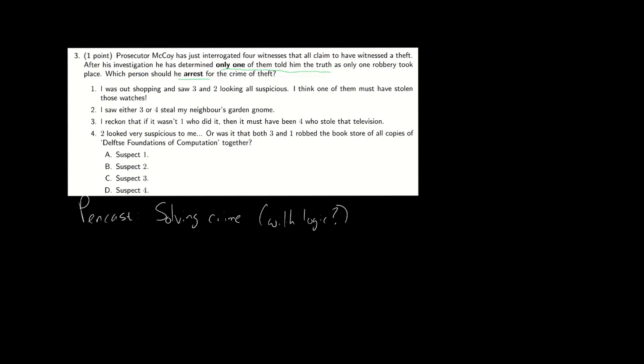Well, let's first take a look at what each of them state. So the first one says that either two or three committed the crime. The second person says that three or four committed the crime. The third says that if it wasn't one, then it must have been four. So this takes the form of an implication. And the fourth one says it was either two or three and one did it together.